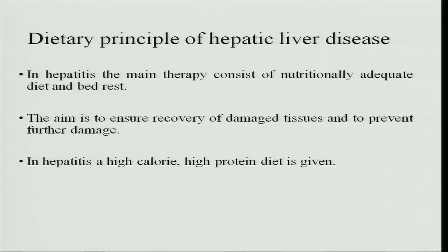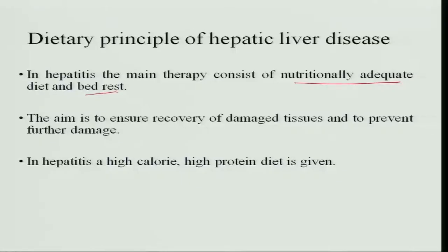The main dietary principle for hepatic liver disease is a nutritionally adequate diet and bed rest. Generally people starve individuals with fever, jaundice, or liver disease, but we must give them nutritionally adequate diet and proper rest. Rest is the most important thing for reducing hepatitis. The aim is to ensure recovery from damaged tissues and prevent further damage, so repair and maintenance are important — therefore give a high calorie, high protein diet.